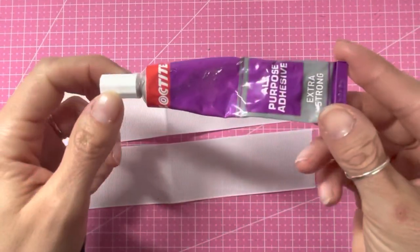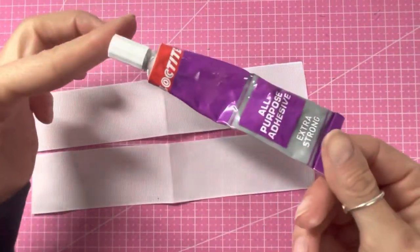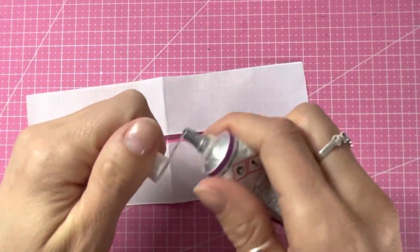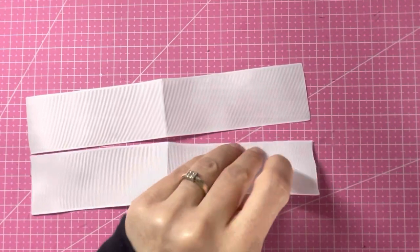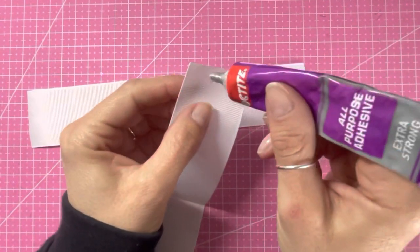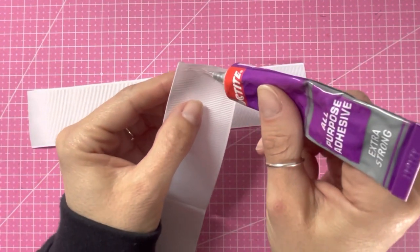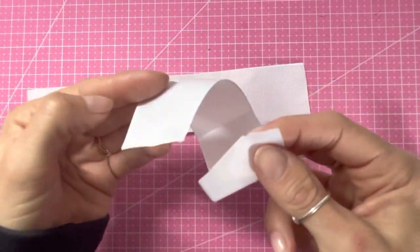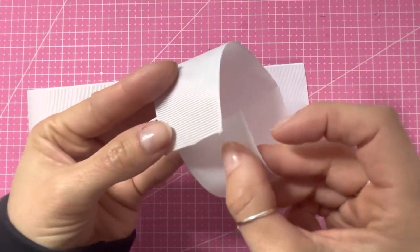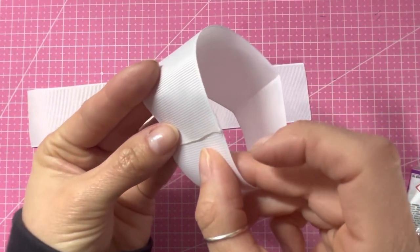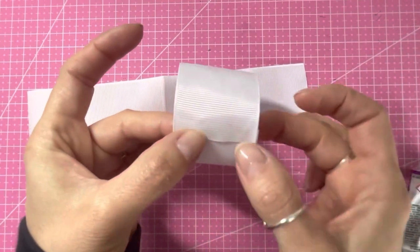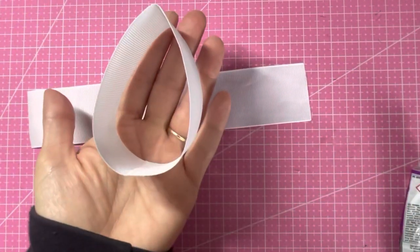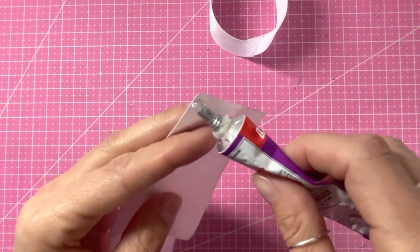I've got here some all-purpose adhesive. You can get this in different makes as long as it's an all-purpose adhesive and it is a clear glue. What you need to do is on one end of the ribbon, just pop a small amount of the all-purpose adhesive and join the two ends together by overlapping them around a half a centimeter, making sure they're nice and straight. So you've got this loop. Do the same on both pieces.